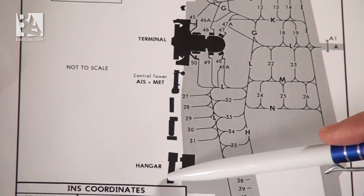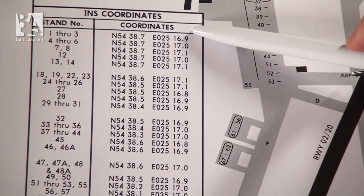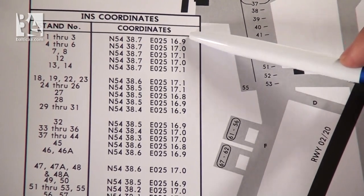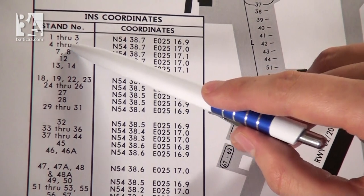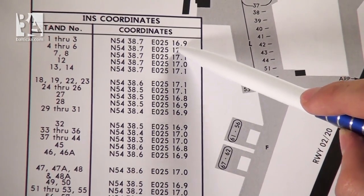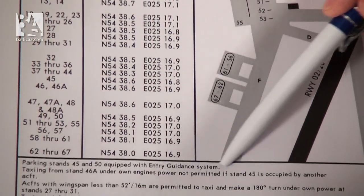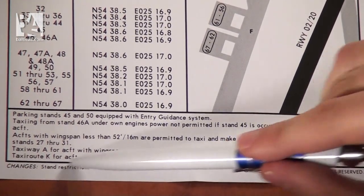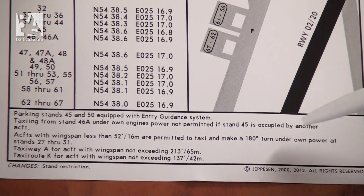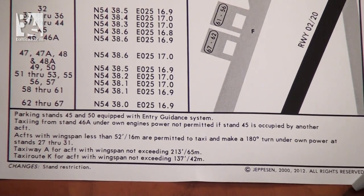In the lower left part of the chart we have a big square for INS coordinates. This would be used for IRS or INS alignment for the aircraft according to their stand positions. For example, for stands 1 through 3 we have coordinates North 54°38.7' and East 25°16.9' and so on. On the bottom part of the chart there is additional information about which stands are equipped with entry guiding systems, that taxiing from stand 46A under one engine power is not permitted, and other notes associated with parking and taxiing in the terminal area.